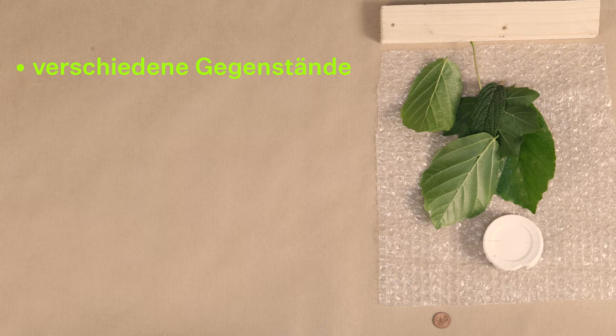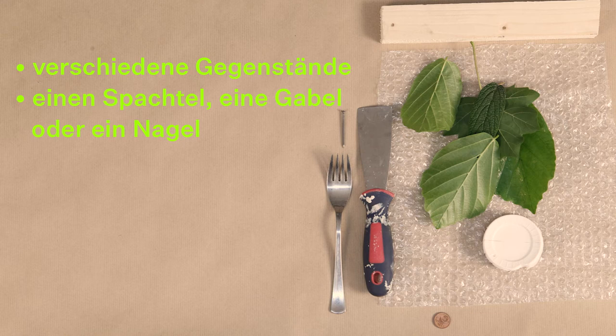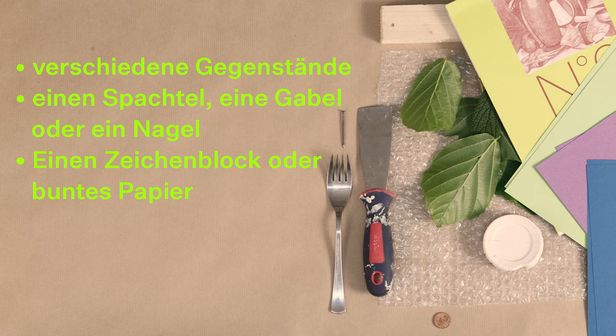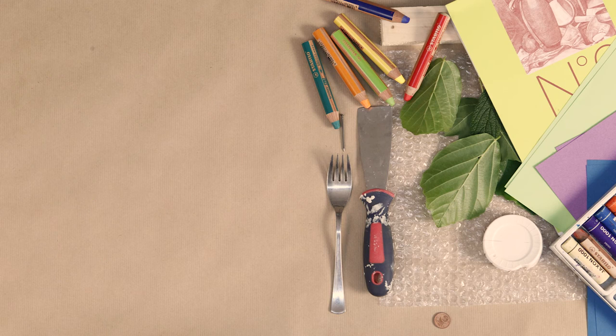Du brauchst verschiedene Gegenstände, die unterschiedliche und keine glatten Oberflächen haben. Vielleicht hast du eine Glücksmünze in deinem Geldbeutel, ein paar schöne Blätter aus dem Garten oder von deinem letzten Spaziergang einen Tannenzapfen. Muscheln, Knöpfe oder ein Stück Kaninchendraht haben auch eine tolle Oberfläche. Einen Spachtel, eine Gabel oder ein Nagel gehen auch. Einen Zeichenblock oder buntes Papier und Wachsmalstifte oder Pastellkreide.